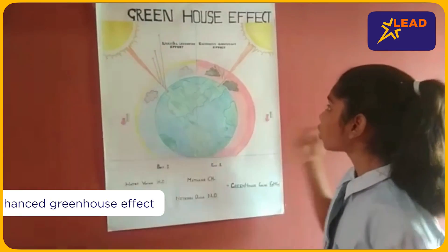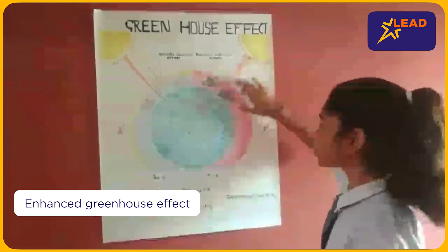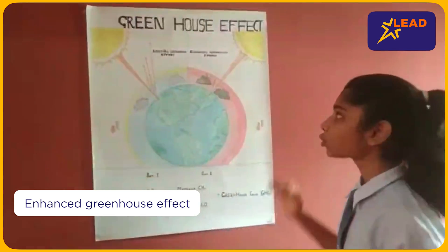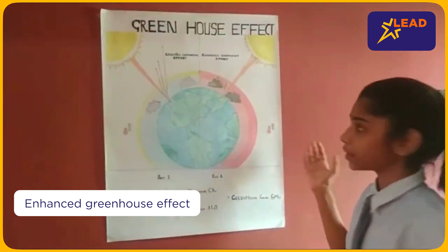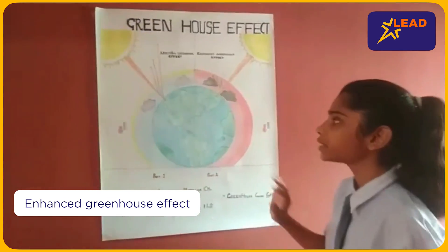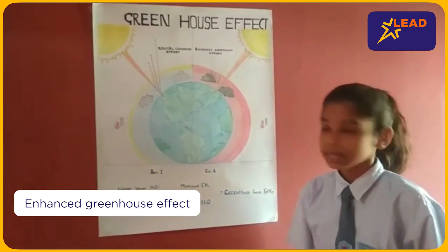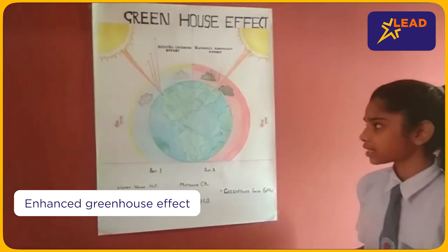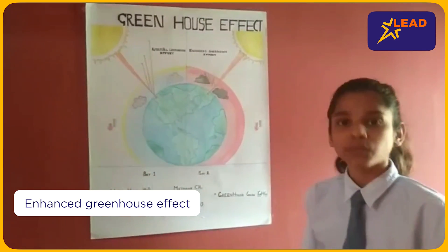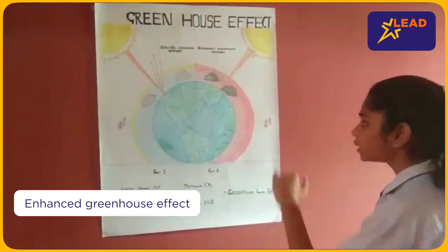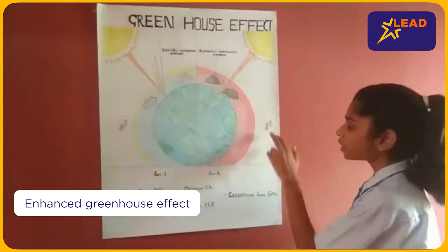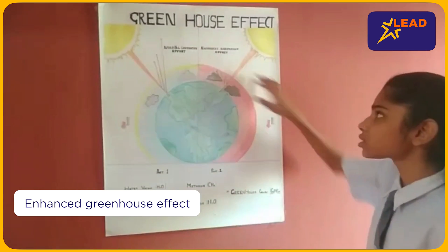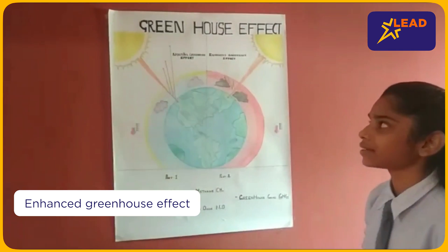In Part 2, what you are seeing? You are seeing that radiation is coming to the earth but it is not going back to space. Why? Because it is absorbed by greenhouse gases, thus making the earth warm. Because the earth is warm, the temperature is not normal. That's why it is called the enhanced greenhouse effect.